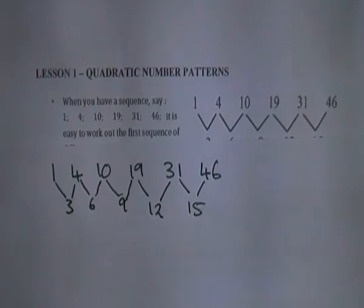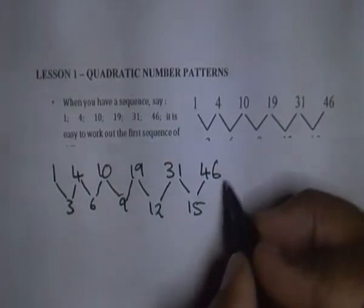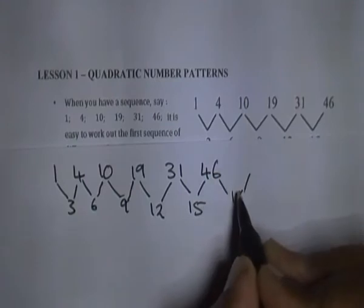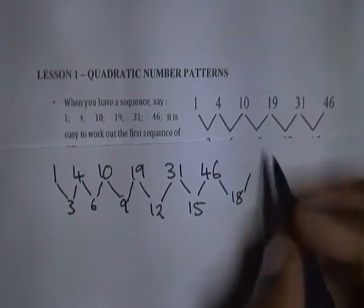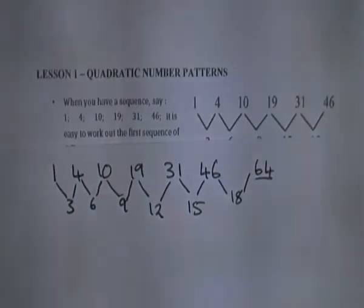Now suppose we need to find the next two numbers. If you say 18 then your guess was right, so the next number will be 46 plus 18, which is 64. That is how you generate the next number and so on.